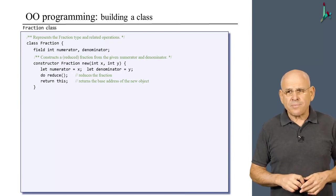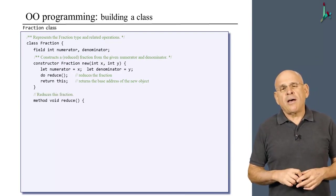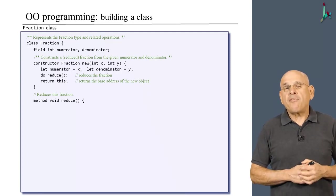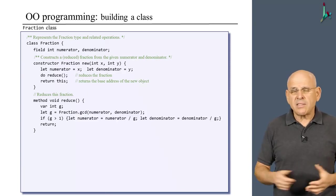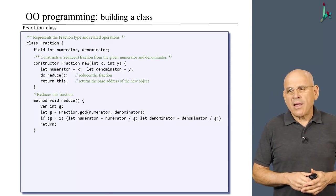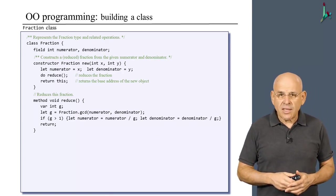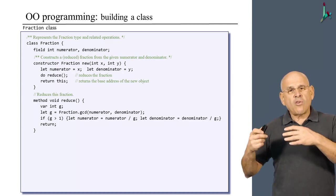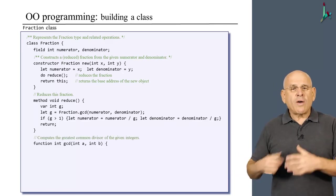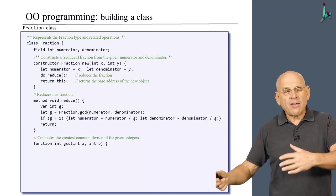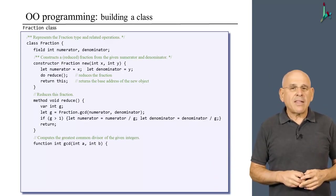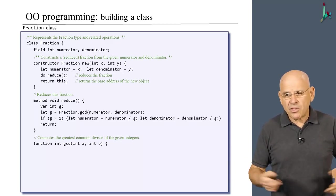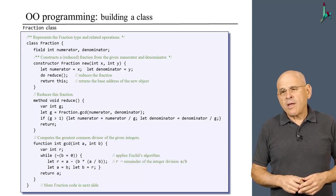Now, the reduce method is a typical method that operates on the fields of the current object. In this case, it reduces the fraction by using a function called GCD. And finally, we have this function GCD, which computes the greatest common denominator. Going back to reduce, once you compute the greatest common denominator of the numerator and the denominator, you can divide both by the GCD and get the reduced fraction. So here is the code of GCD, which is a classical implementation of Euclid's algorithm.